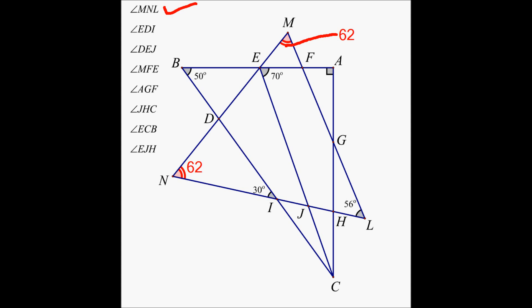The next one is angle EDI. However, I can find another angle first. These three angles — this one, this one, and this one — add up to 180. So using that technique, from 180 if you subtract 62 and 30, you are going to be left with 88. So this angle has to be 88.